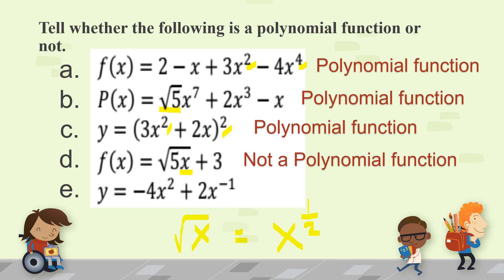And letter e, y = -4x² + 2x⁻¹. So, this is also not a polynomial function. Because negative exponents are not allowed.